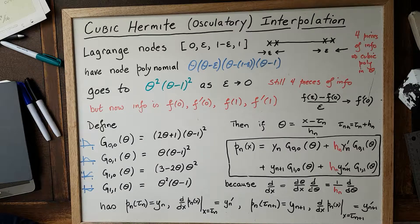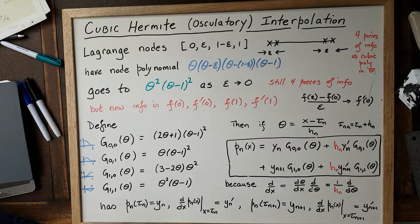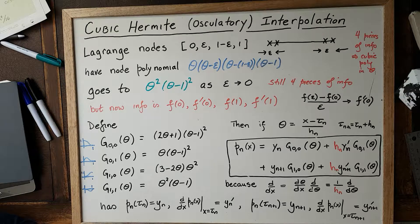I'm going to try and tell you about the underlying polynomial algebra of cubic Hermite interpolation, also called osculatory interpolation, as the book says — that comes from the Latin word 'osculare'. Basically, it's just a limiting kind of Lagrange interpolation.